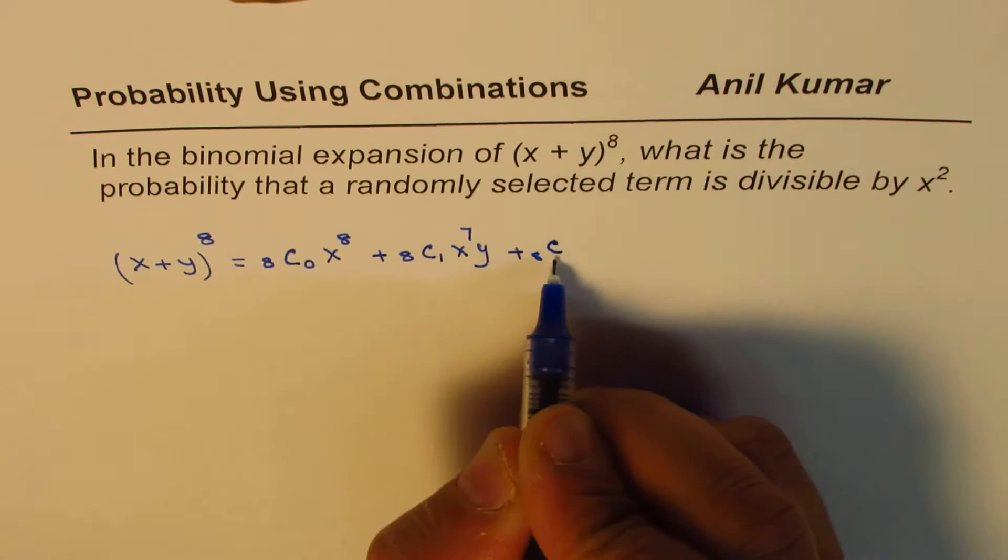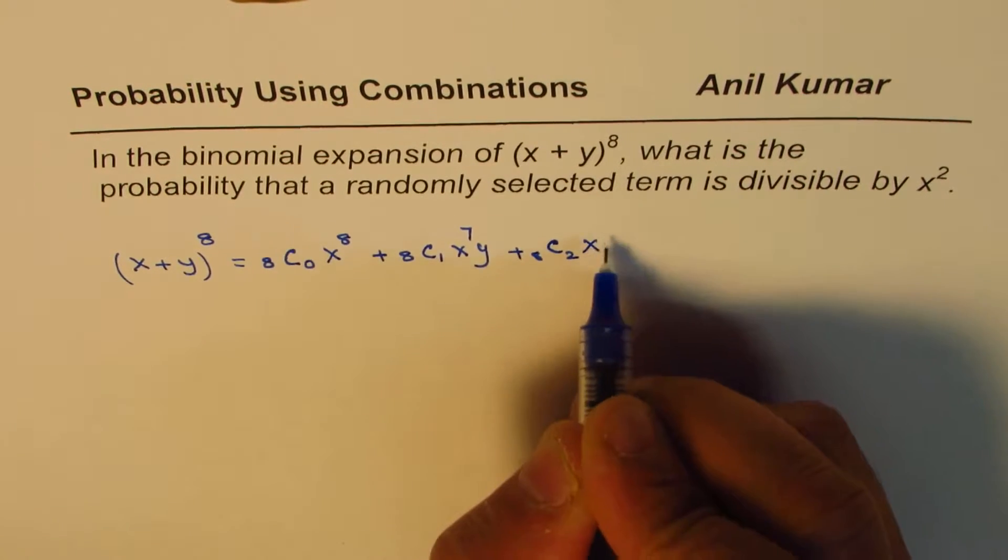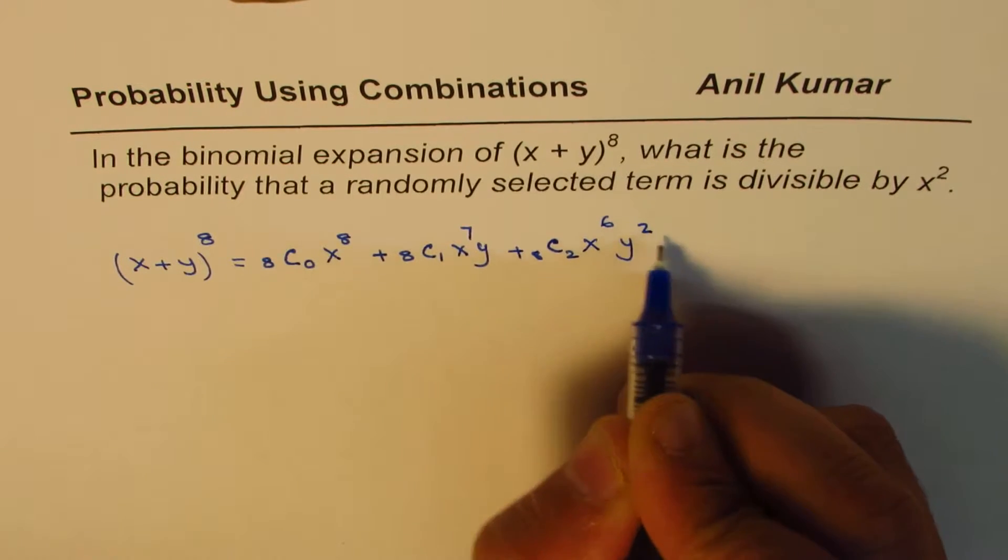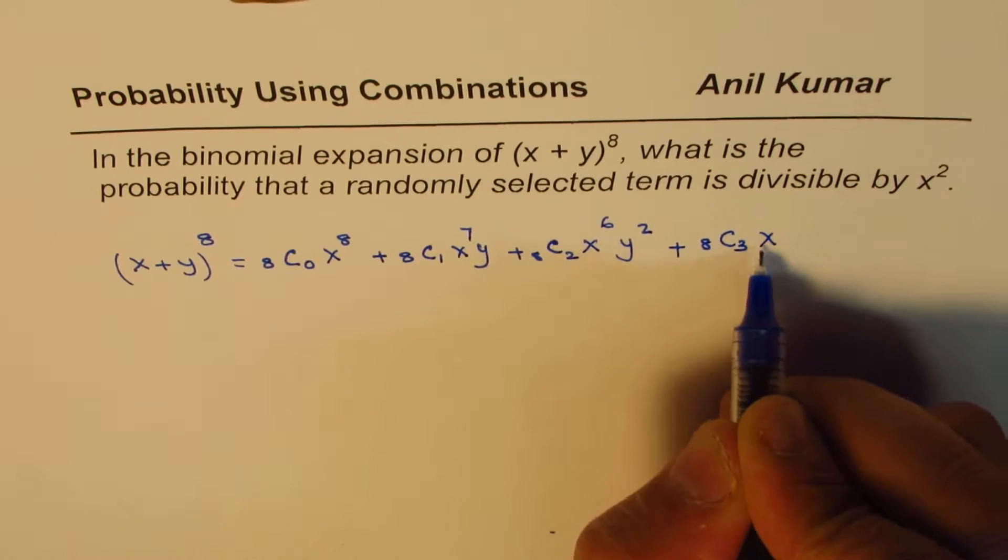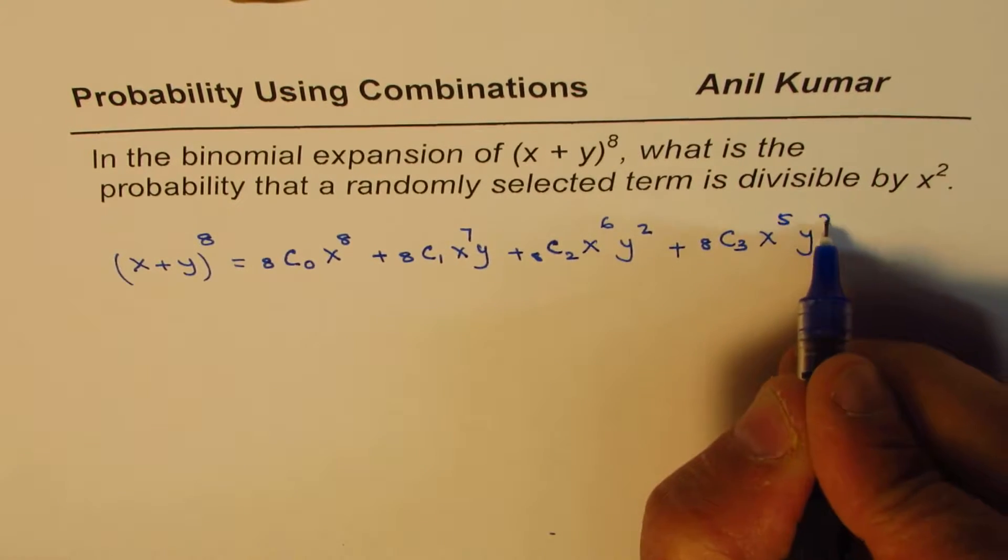Out of 8, we'll take 2, x to the power of 6 y square, plus 8c3 x to the power of 5 y cube.